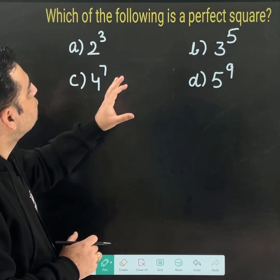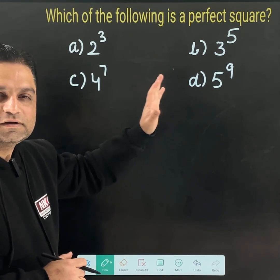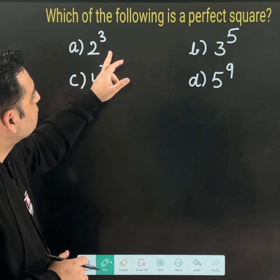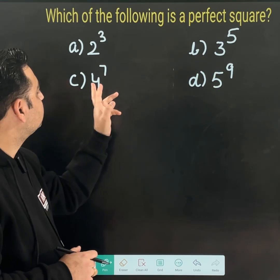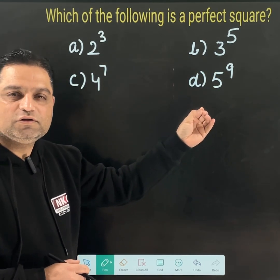Please read the statement. Which of the following is a perfect square? 2 to the power 3, 3 to the power 5, 4 to the power 7, or 5 to the power 9.